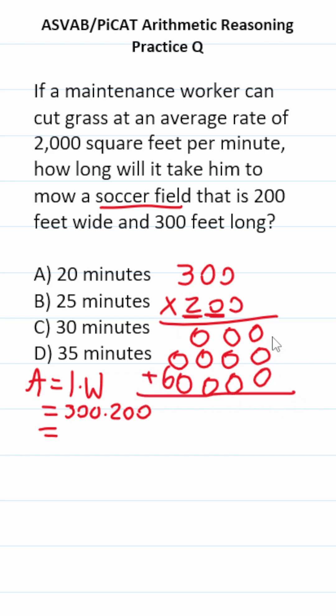So let's add all these up. This is 0, 0, 0, 0, 0, and then 6. So in other words, he has to mow 60,000 square feet.